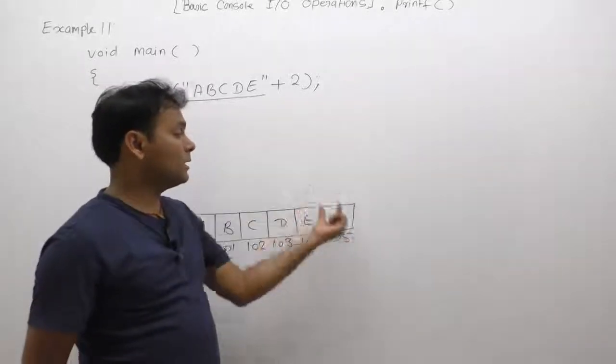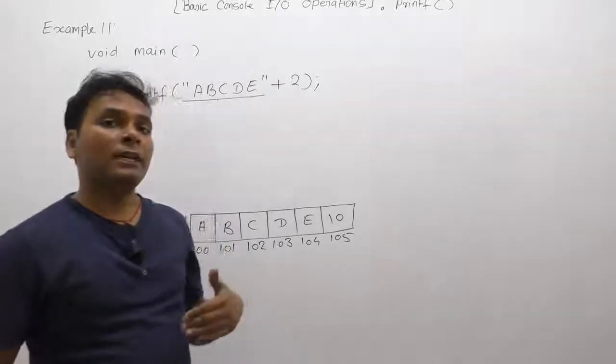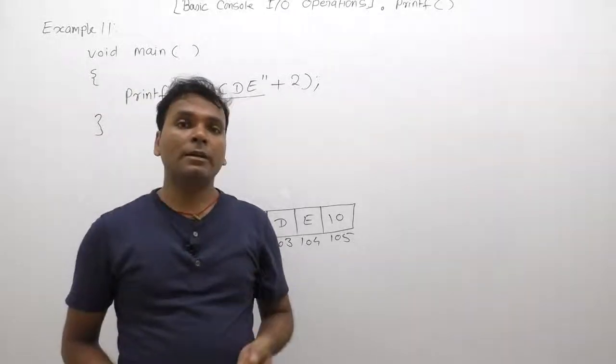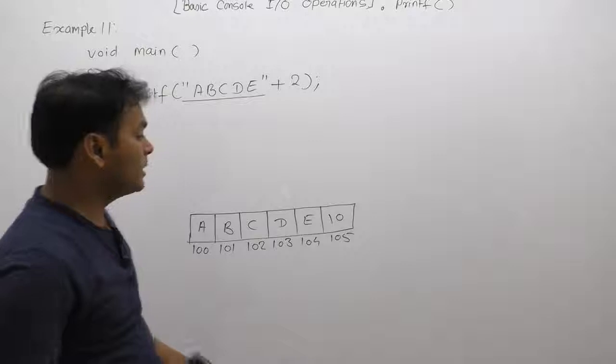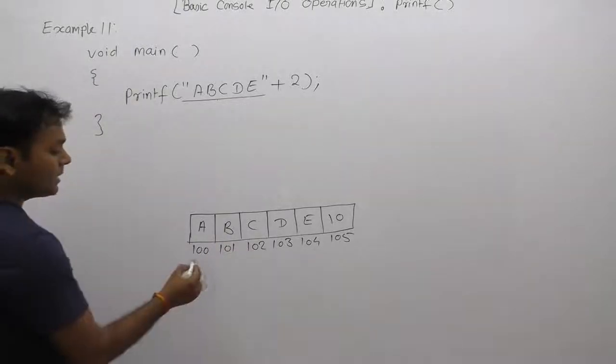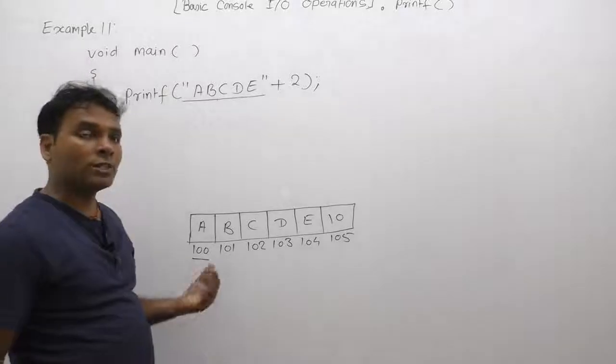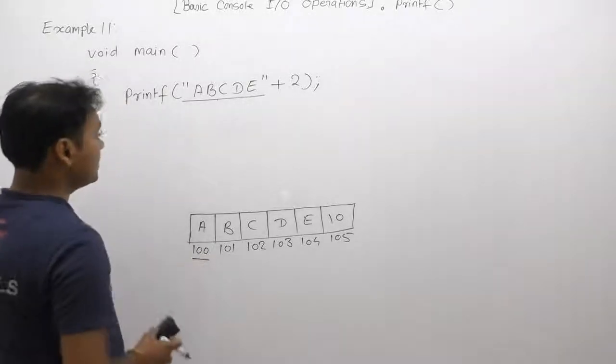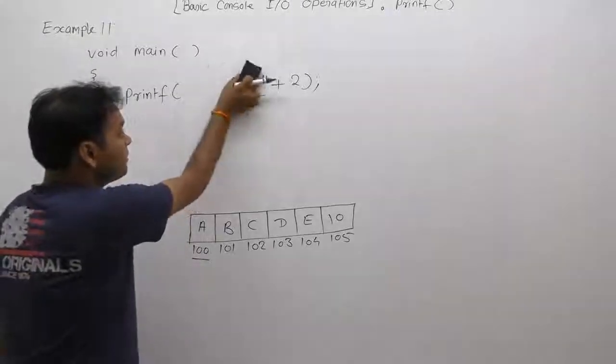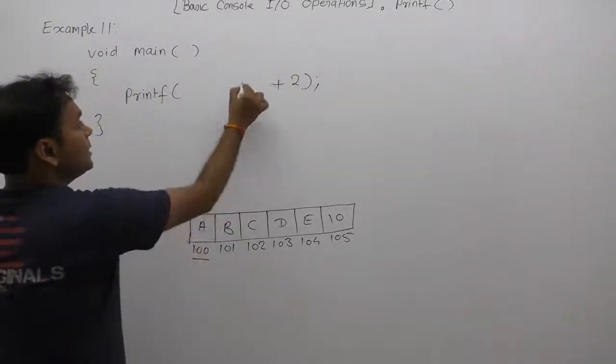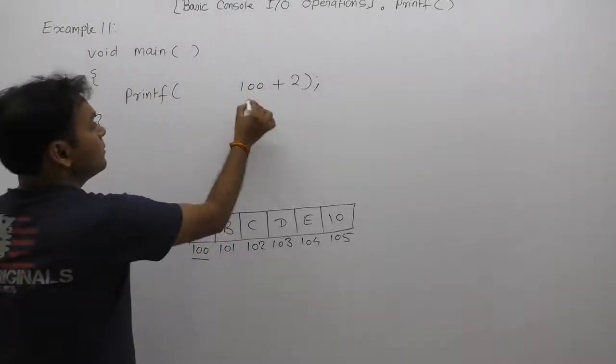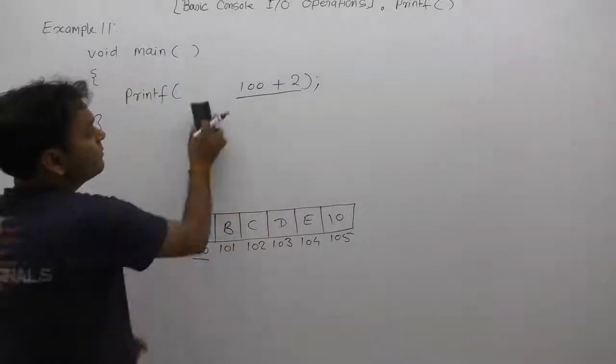Finally, in any place or inside printf, every string is replaced by its base address. What is the base address of this string? The base address is nothing but the address of the first byte, which is 100. In that case, we are replacing the address as 100. Next, we are solving this expression: it becomes 100 plus 2, which becomes 102.